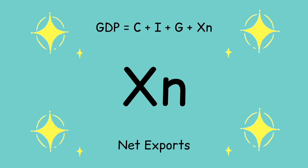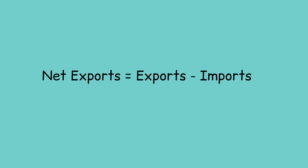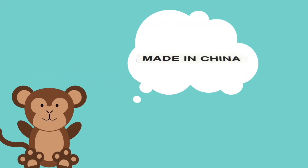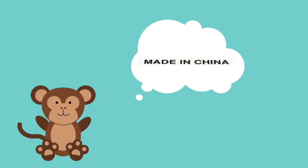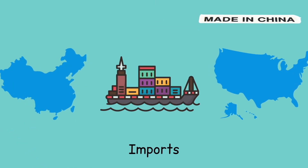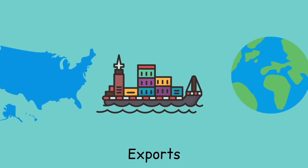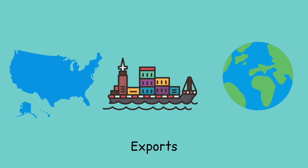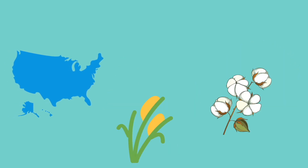XN stands for Net Exports. Net Exports equals Exports minus Imports. Remember the last time you saw a sticker that said Made in China? That means that the good was imported from China. But the U.S. also exports goods to other countries. For example, other countries buy U.S. exports of rice, cotton, and wheat.